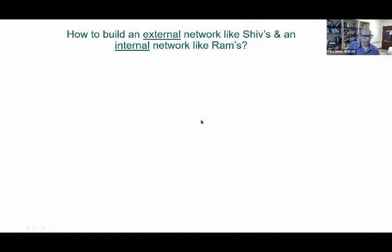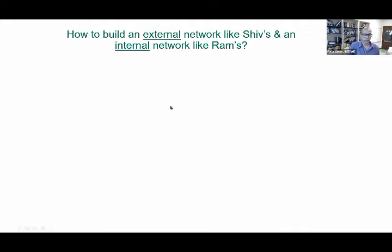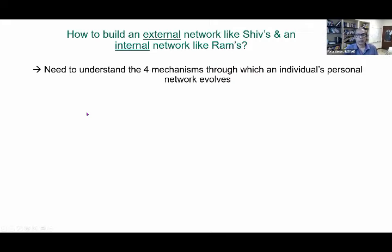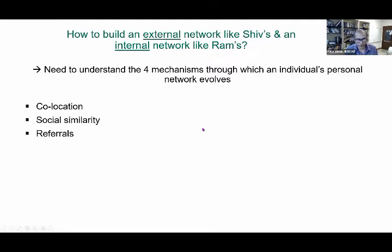We need to think about how connections form and where people get their contacts from. In today's modern contemporary society, there are really four big ways in which people form connections: co-location, social similarity, referrals, and shared activity.